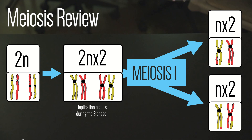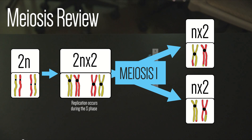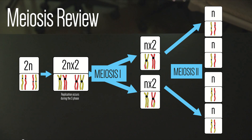Notice in the graphic that cells are already haploid after the first division. In mitosis, there were never any haploid cells before, after, or during the process. Then the second division in meiosis produces cells that have single chromosomes — that is to say, the chromatids have been pulled apart and are now in separate cells as new single chromosomes.